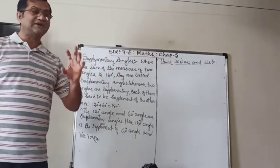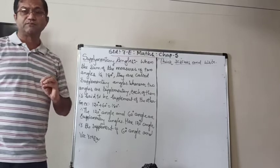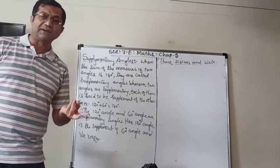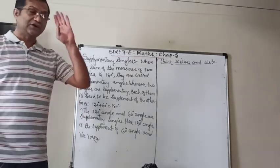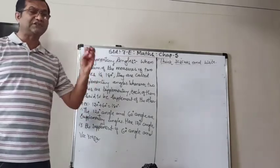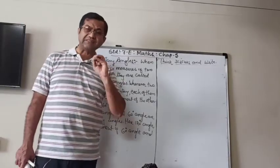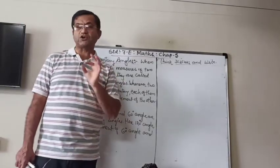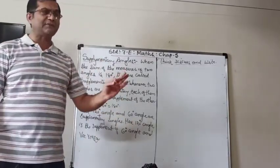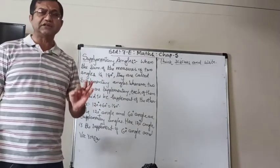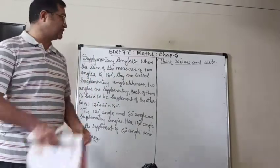So as I told you, don't get confused between complementary and supplementary. Keep in mind that when the sum of their measures is 90 degrees, they are complementary, and when the sum of their measures is 180 degrees, they are supplementary angles.